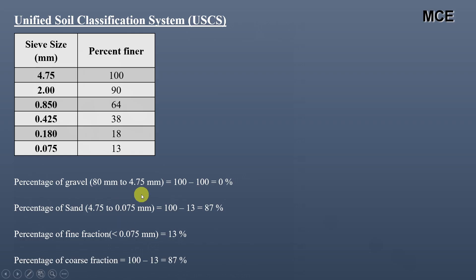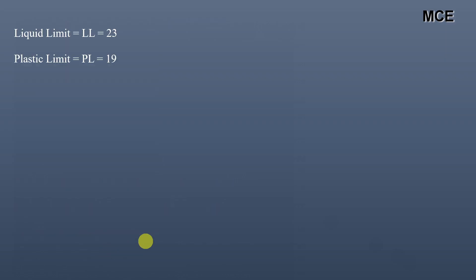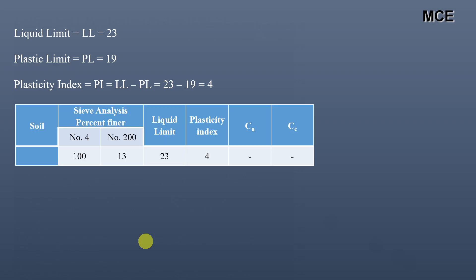The percentage of coarse fraction, which includes gravel plus sand — that is, material greater than 0.075 mm — is 100 minus 13, which is 87 percent. All the coarse fraction present in this soil is sand. Liquid limit is 23 and plastic limit is 19, so plasticity index equals liquid limit minus plastic limit, which is 23 minus 19, giving a plasticity index of 4.